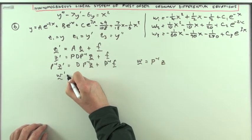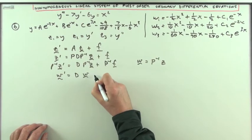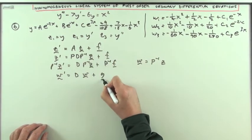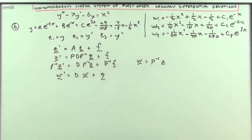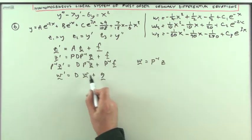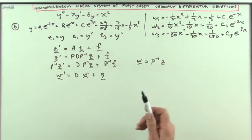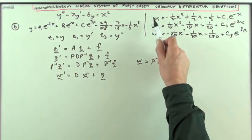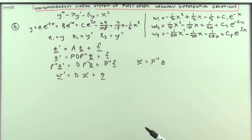w dashed equals Dw plus this then turned into some other vector of functions, and that readily decoupled them into the three separate linear differential equations, first-order equations, which had those three as the solution.